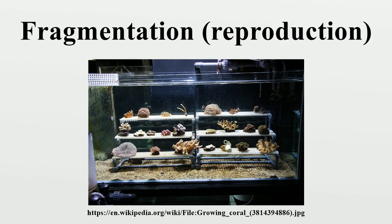Fragmentation, also known as splitting, as a method of reproduction is seen in many organisms such as filamentous cyanobacteria, molds, lichens, and many plants and animals such as sponges, acoel flatworms, some annelid worms, and sea stars.